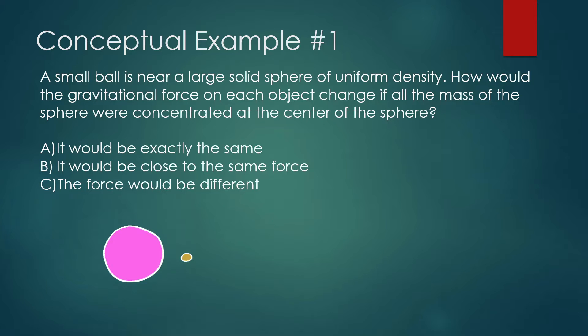First question: a small ball is near a large solid sphere of uniform density. How would the gravitational force on each object change if all the mass of the sphere were concentrated at the center of the sphere? A — it would be exactly the same. B — it would be close to the same force. C — the force would be different.